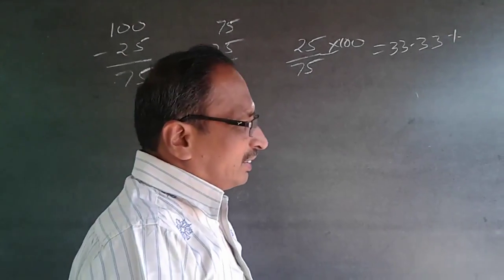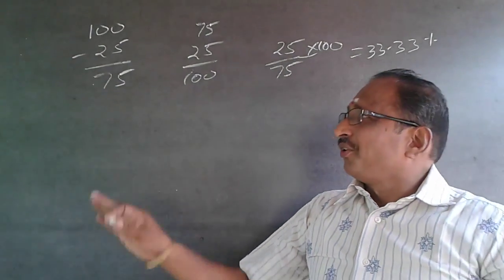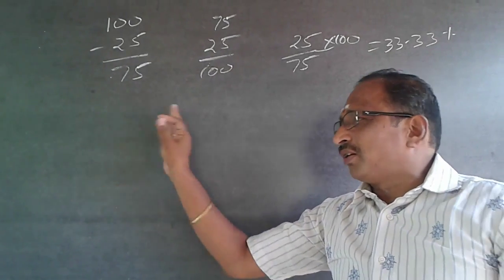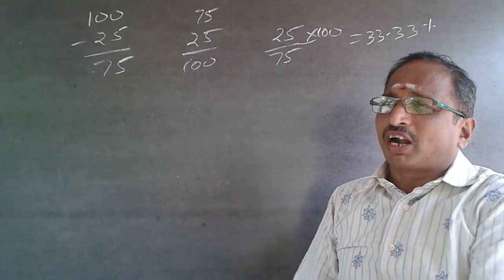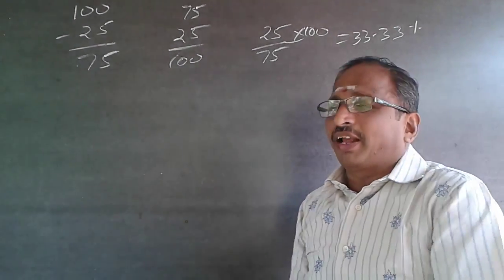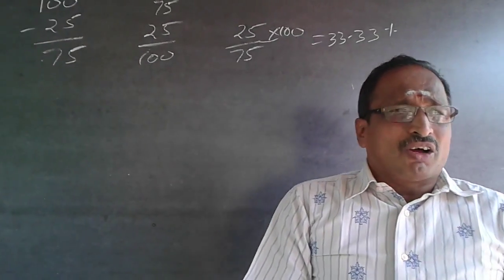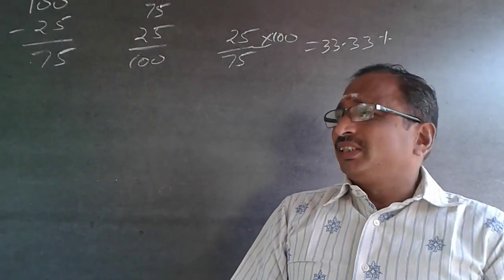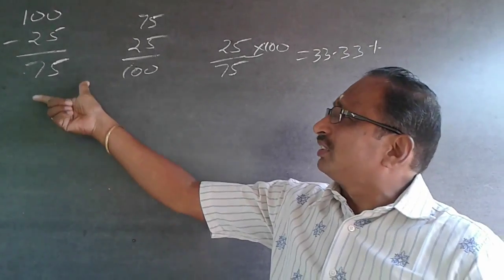Instead of using a variable x - this is the shortcut. Don't use x then work it out as x minus 25 by 100 of x. All that will be an extra procedure. Instead, simply follow this: 100 is becoming 75.